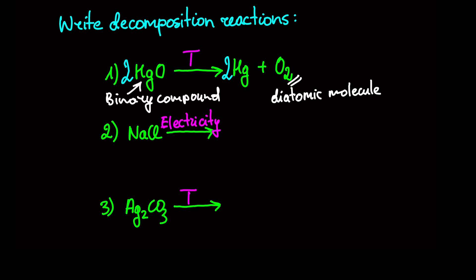Next is sodium chloride. Once again, we have a binary compound, so the product should be pure sodium and chlorine. Chlorine, like oxygen, is a diatomic molecule. To balance the reaction, we write 2 in front of NaCl and pure Na.